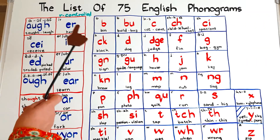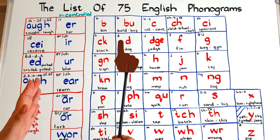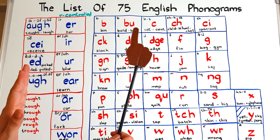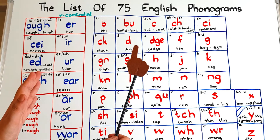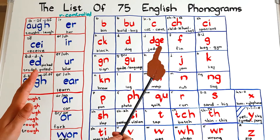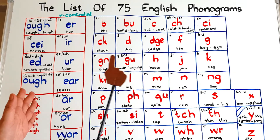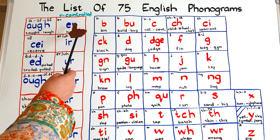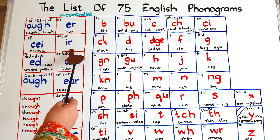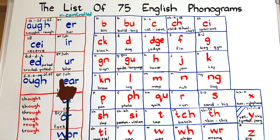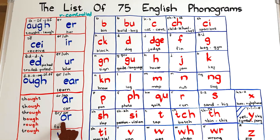Now let's come to R-controlled vowels. In American English, if a vowel is followed by the letter R, letter R dominates over the vowel and says its sound. Let's see these words in American English first. UR as in 'her', also UR as in 'bird', UR as in 'blur', UR as in 'learn' or 'search'. Then AR as in 'car', OR as in 'fork', and the combination WOR, which we pronounce as 'wer' — 'work' says 'werk'.